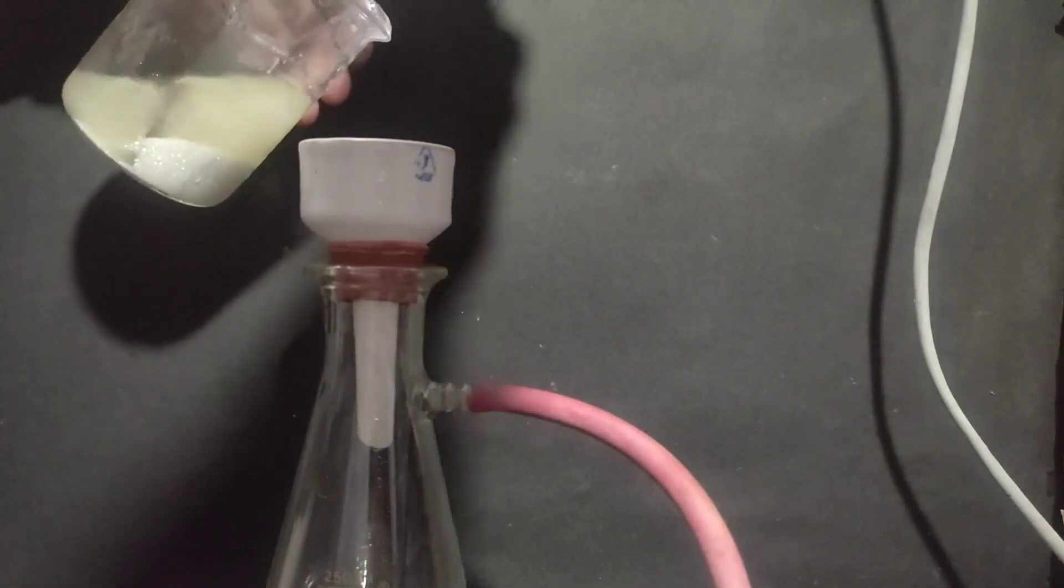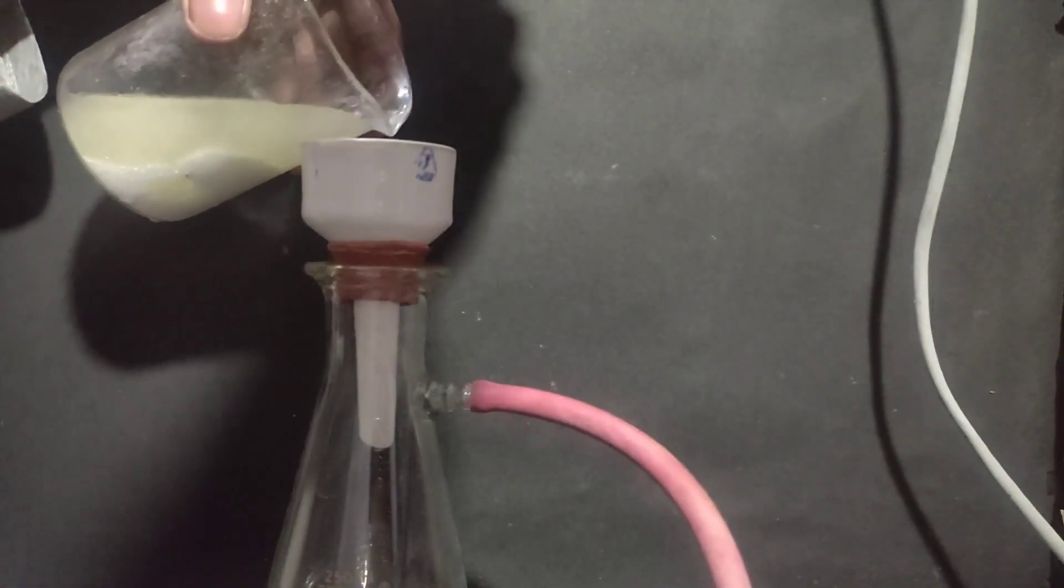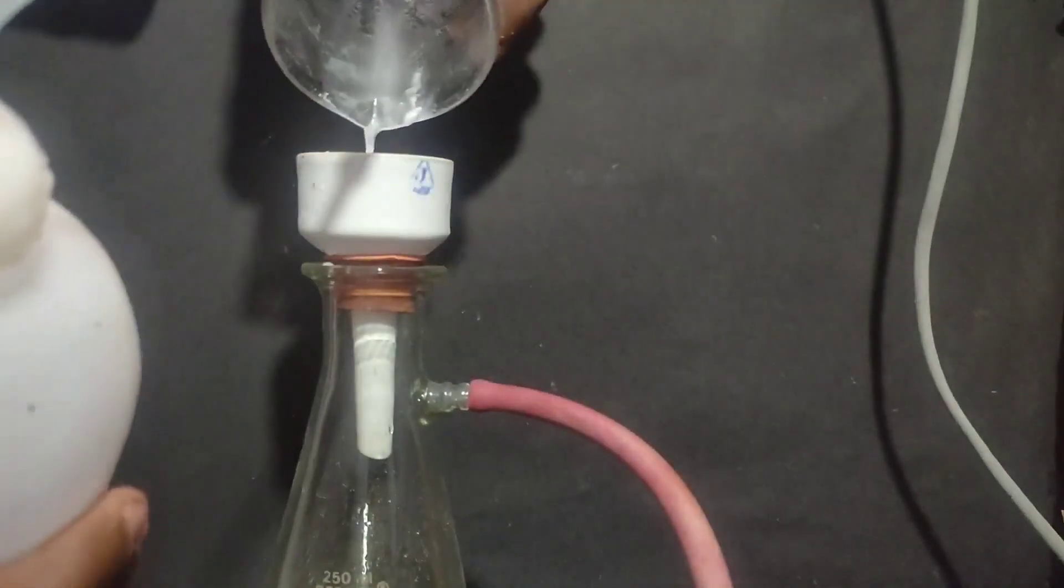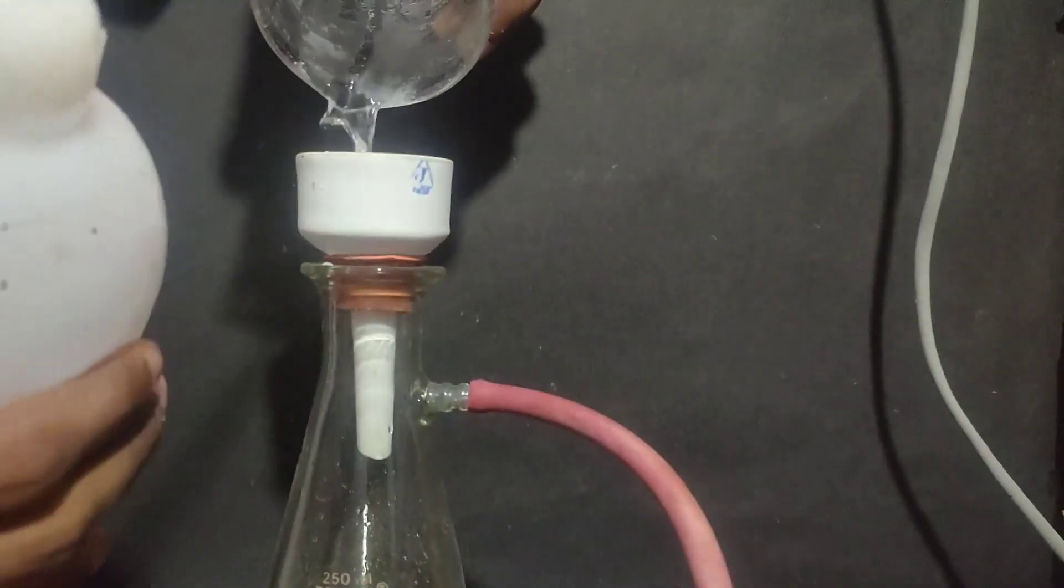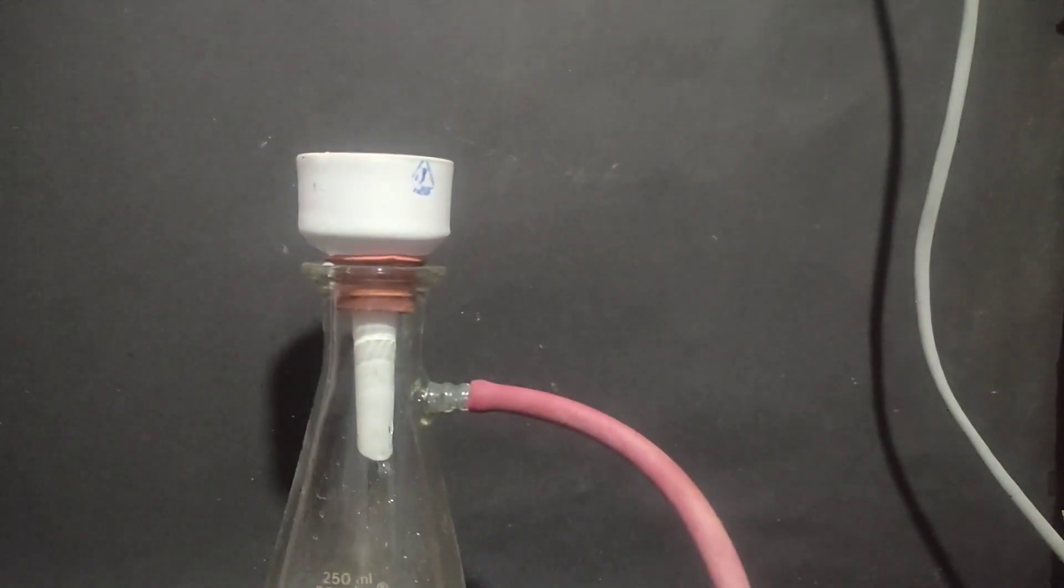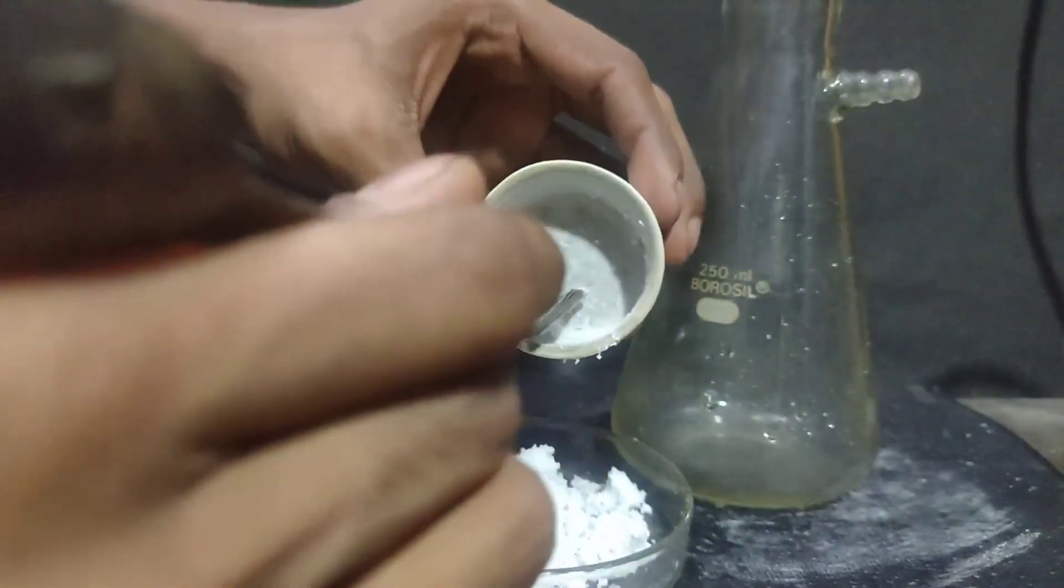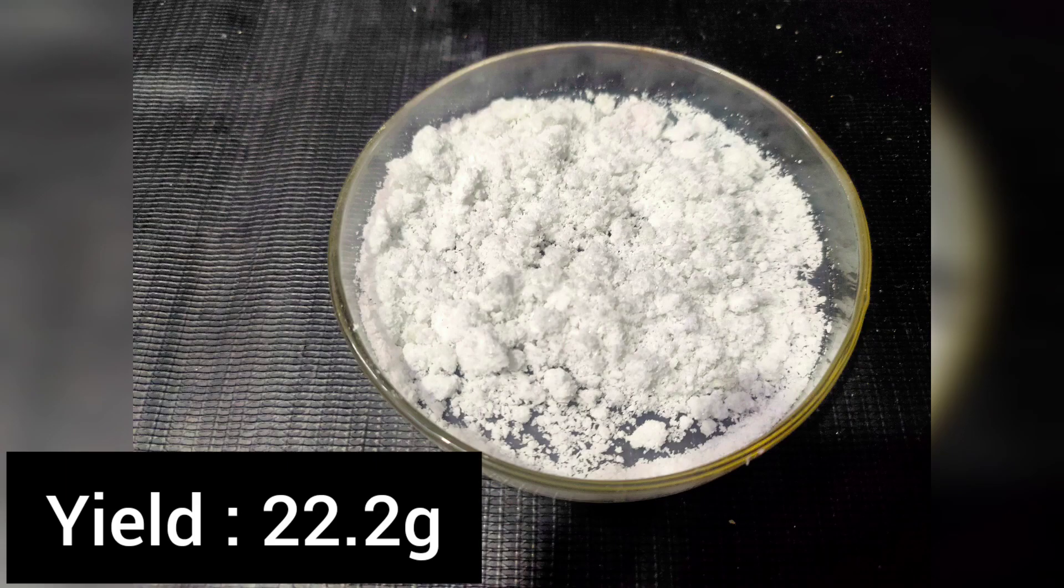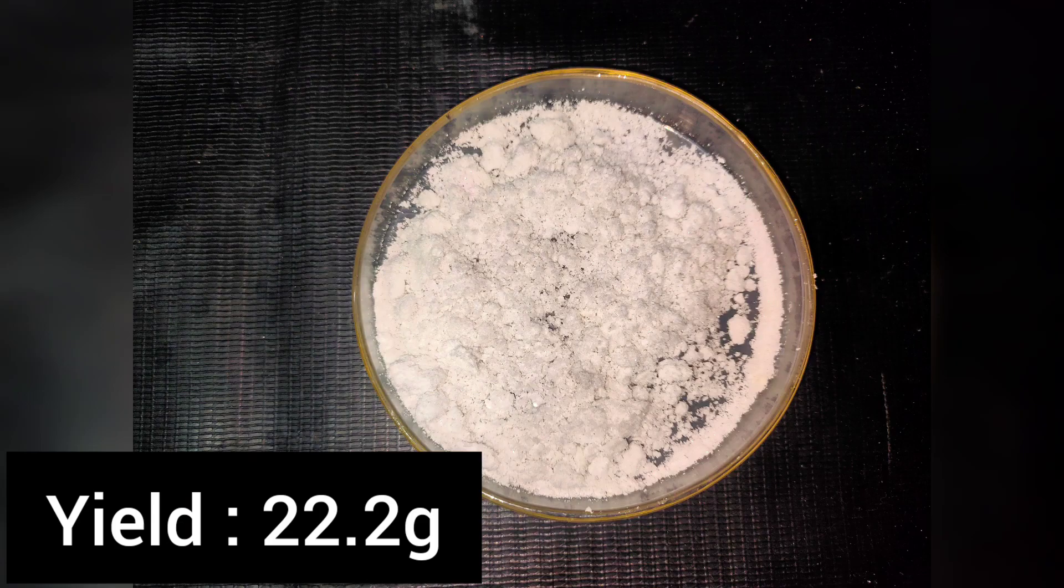So on cooling the solution inside the freezer, these are the crystals of potassium bromate formed and I filtered them using a buchner funnel on vacuum filtration. The beaker and the precipitate was washed with cold distilled water. The crystals were transferred onto a petri dish and they were dried in a desiccator. The yield of the crystals after drying came around 22.2 grams.